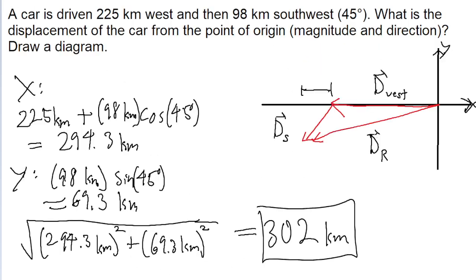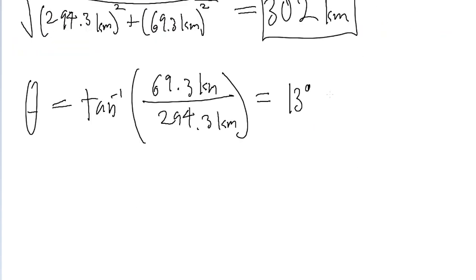And because we were using positive angles, starting from the negative x-axis, this is specifically going to be 13 degrees south of west. It's important we specify that, because if we don't, then 13 degrees could mean like four different things, which is not very helpful.